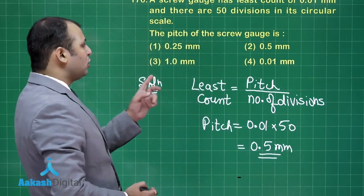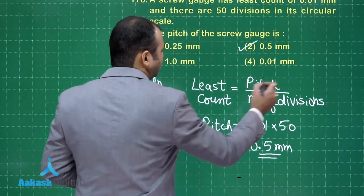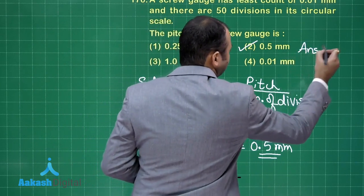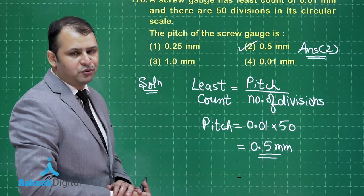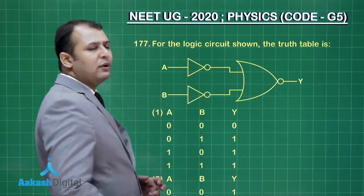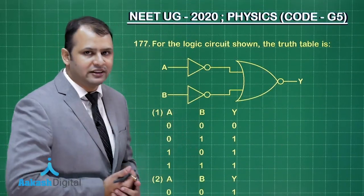Let us see which is the best suited option among the four. Yes, option number 2 is the correct answer to this question. I hope you have understood this one. Now let us move on to our next question, question number 177. This belongs to chapter semiconductors and devices.